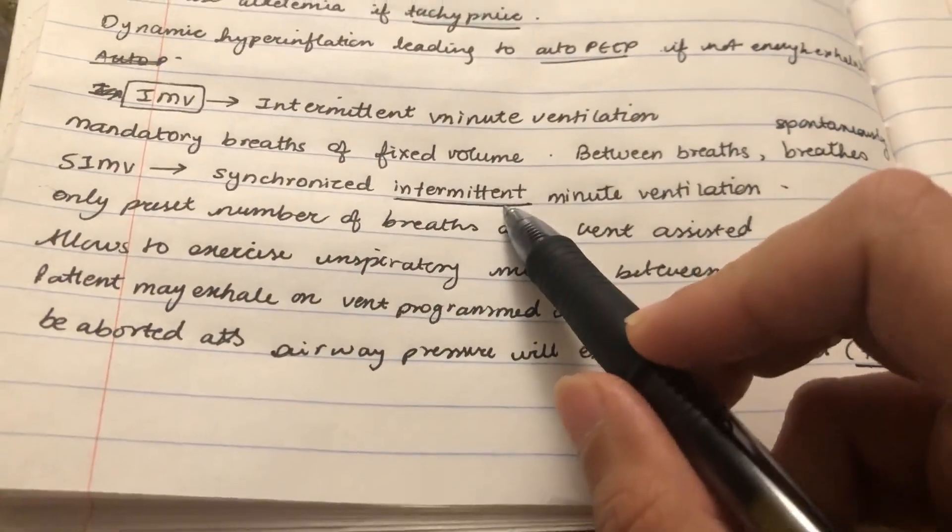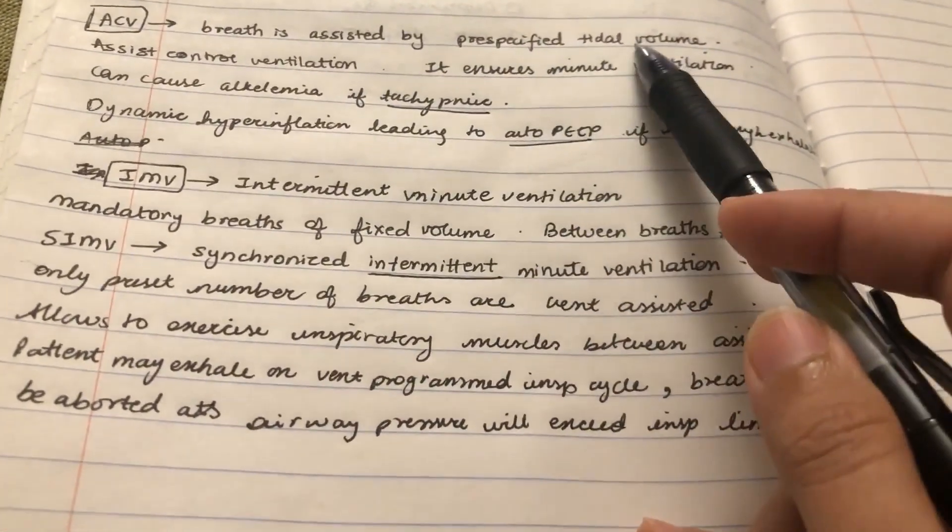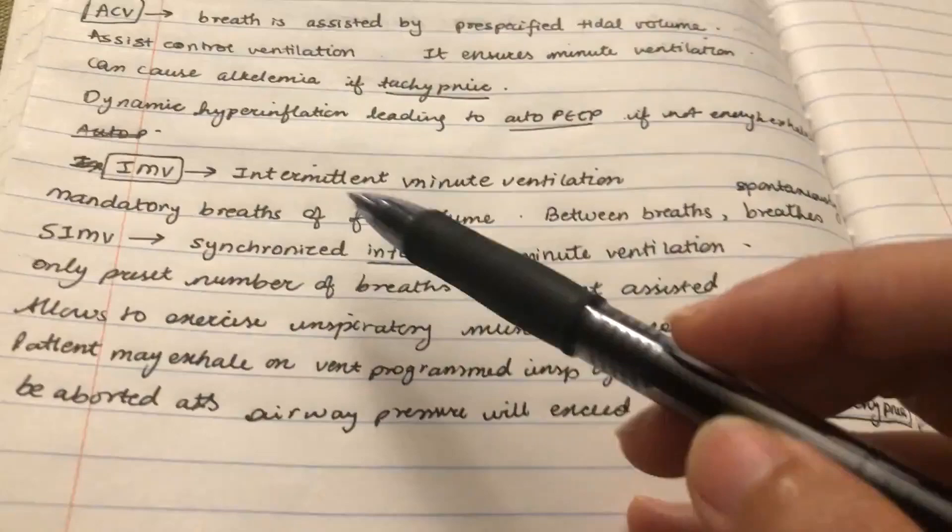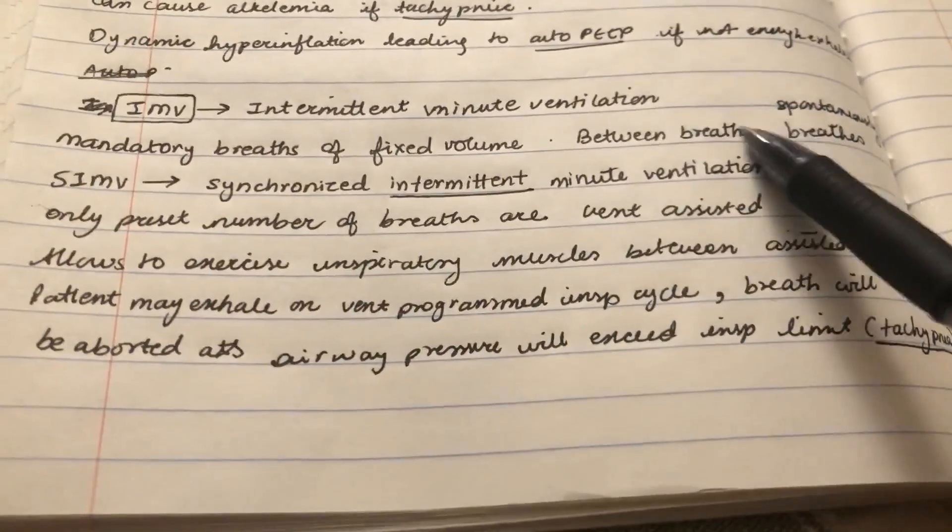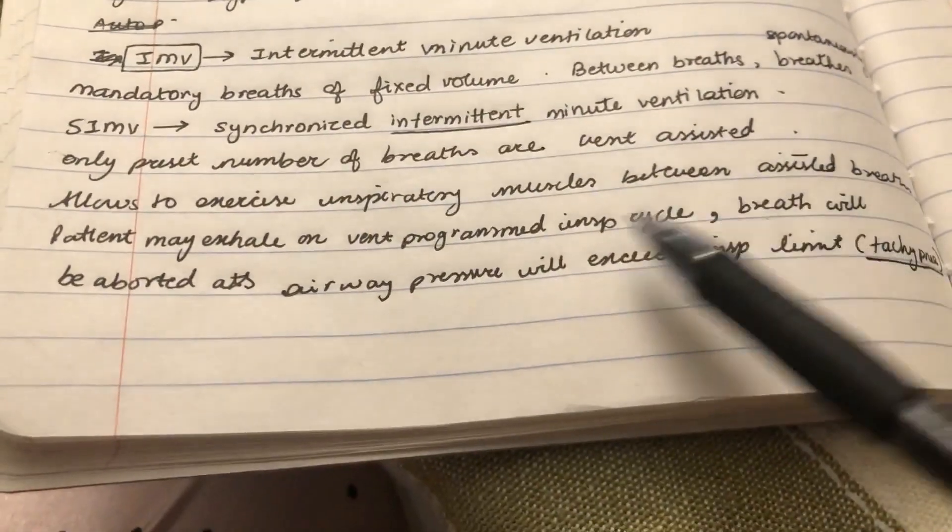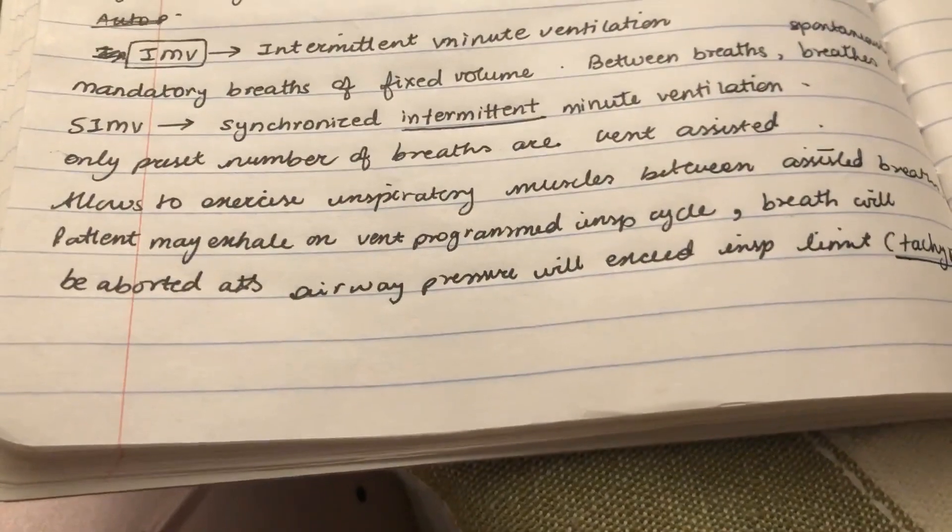If you have to do the entire breath with the ventilator, the volume in ACV is a specified tidal volume. You don't have all mandatory breaths, so these breaths are spontaneous, which has the advantage that your inspiratory muscles exercise.